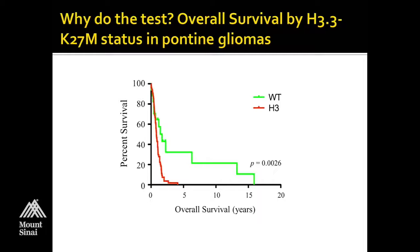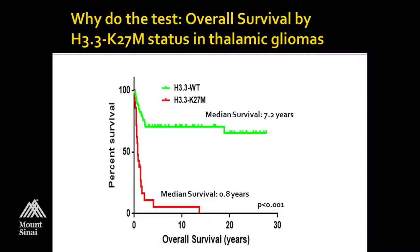This is the survival data. For pontine gliomas, the red line shows those with the histone mutation and the green line shows those without. Eventually everybody with a pontine glioma generally dies, but survival for those with a histone mutation is very poor — only a couple of patients surviving beyond two years. For the thalamus, if you're wild-type for the histone, overall survival across all thalamic gliomas is actually quite good — median survival in our case was 7.2 years — whereas if you have the histone mutation, median survival is less than a year.